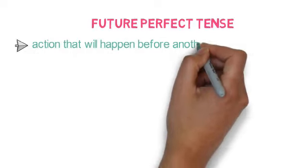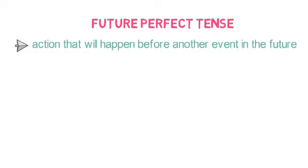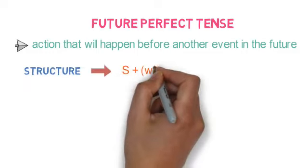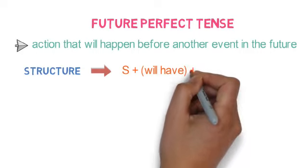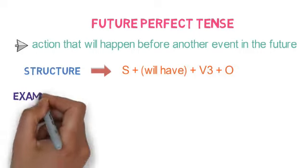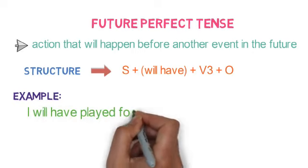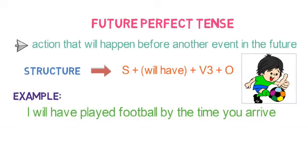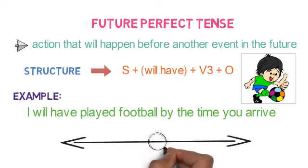Future perfect tense refers to an action that will happen before any other event in the future. Here, we are comparing two events in the future. The structure of it is: subject + will have + verb's third form + object. For example, I will have played football by the time you arrive. So, my action of playing will be already completed before the action of your arriving. In the timeline, it will look like this.